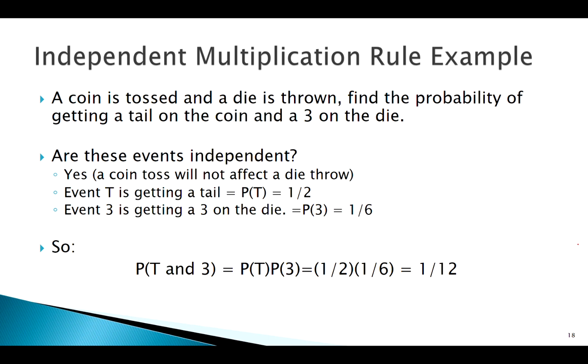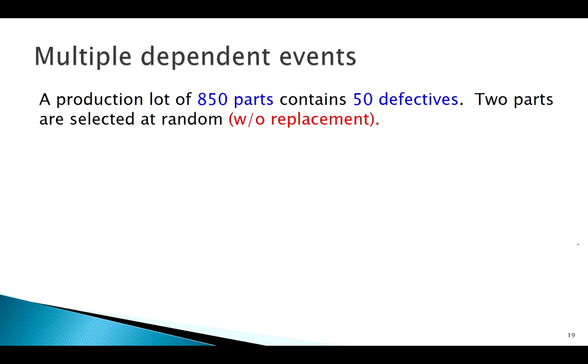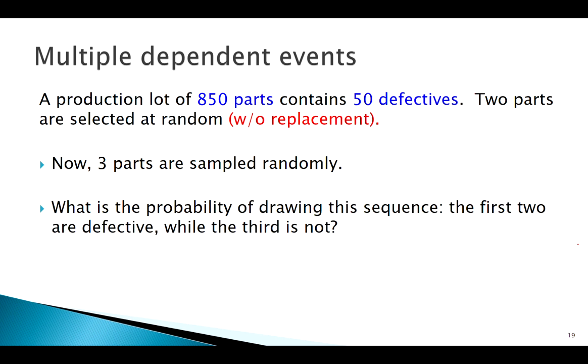When things are mutually exclusive it makes stuff easy. Otherwise it's a little more complicated because I have to deal with conditionals, subtracting intersections, stuff like that. Let's try extending our multiplication rule to multiple events. Back to our production situation - 850 parts, 50 are defective. Say I'm choosing three parts and I want the probability of a sequence.